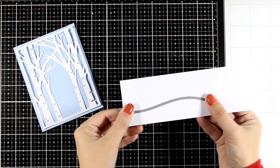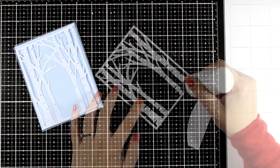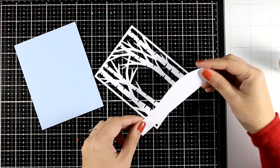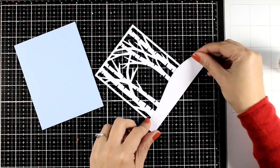And I'm also going to die cut a snowbank that I can use for the bottom. This adds some extra layers on my card and makes it look more finished.